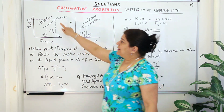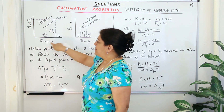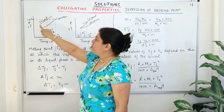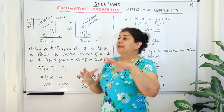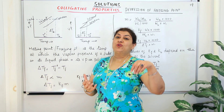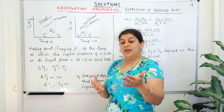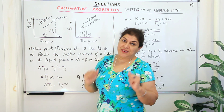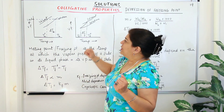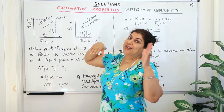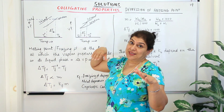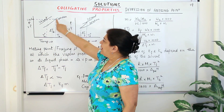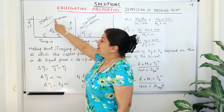Why is that? In the solvent, if this is temperature on one axis and vapor pressure on the other, and this is the curve for the pure solvent, then when you add solute to it the molecules of the solute occupy the surface, so the surface area available for evaporation decreases. As a result, the vapor pressure decreases and since the vapor pressure decreases, the boiling point increases.